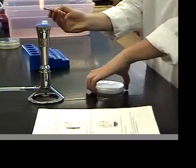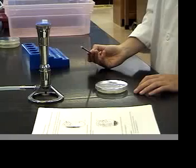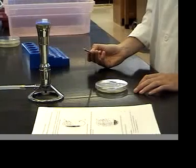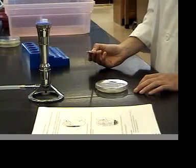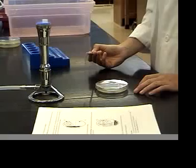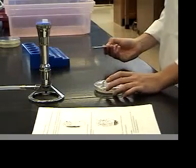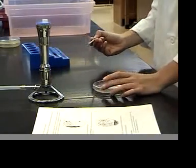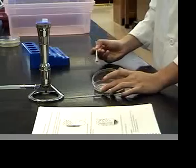Be certain to flame your loop between quadrants. Now in order to manually dilute the sample, you'll pull down a couple of streak marks from the top section of your plate, pass into that top section only a couple of times.